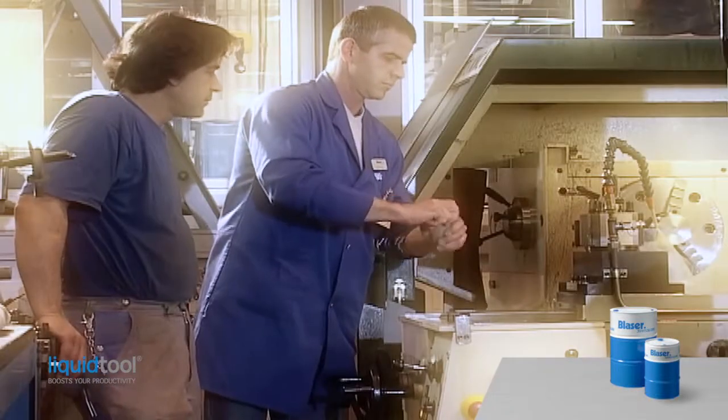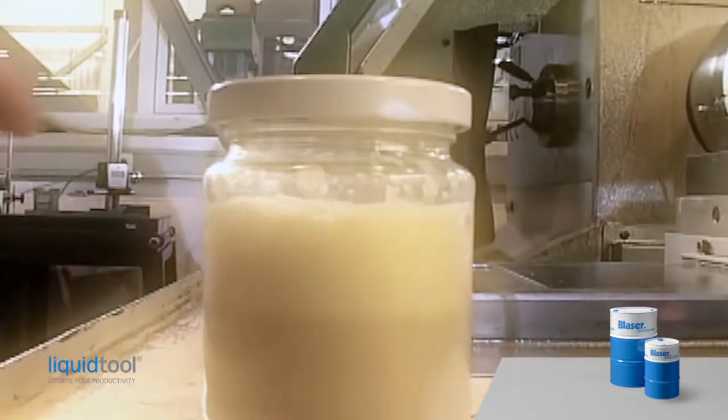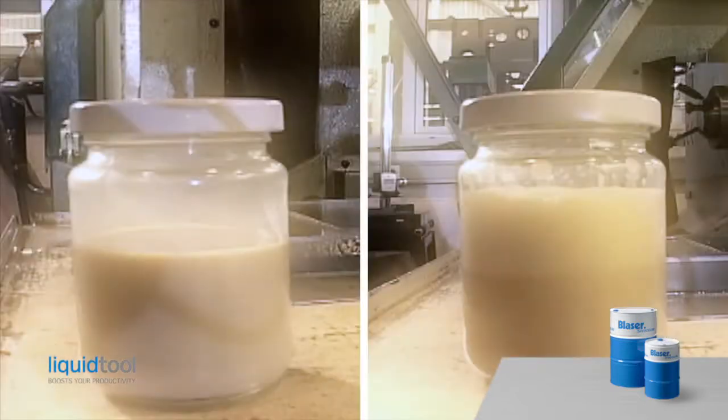And finally comes the foam test. Fill the test bottle halfway, shake the emulsion for 30 seconds, and let it stand. In a good emulsion, all the foam will collapse within 15 seconds.